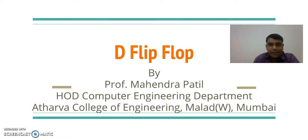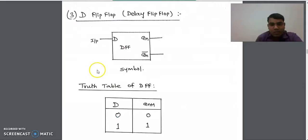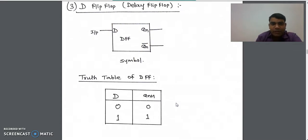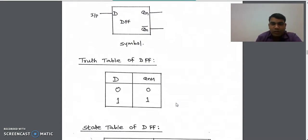In this session we will see the working of D flip-flop, also known as delay flip-flop. This is the symbol we use to represent D flip-flop. A D flip-flop takes a single input D and has two outputs, Qn and Qn bar. It is called delay flip-flop because we get the same output after a certain delay into the next state.